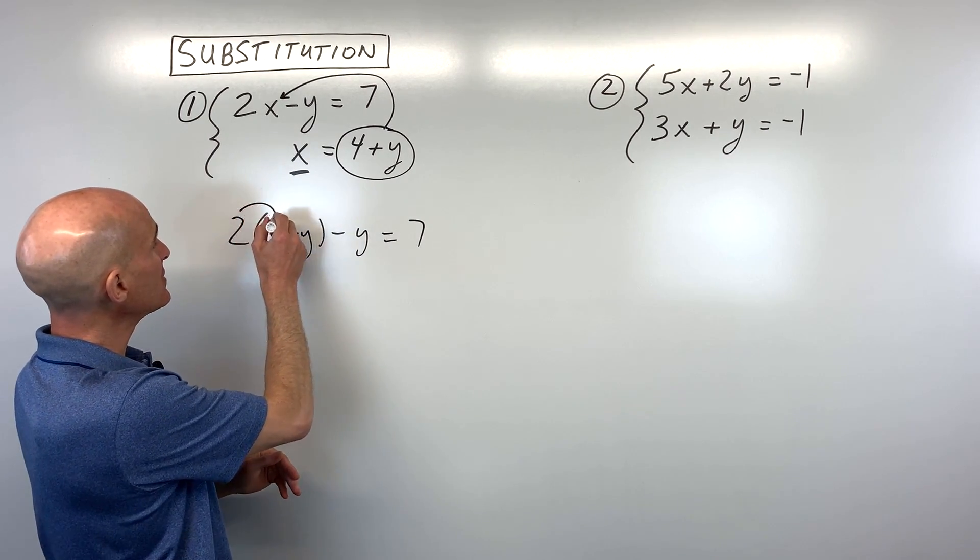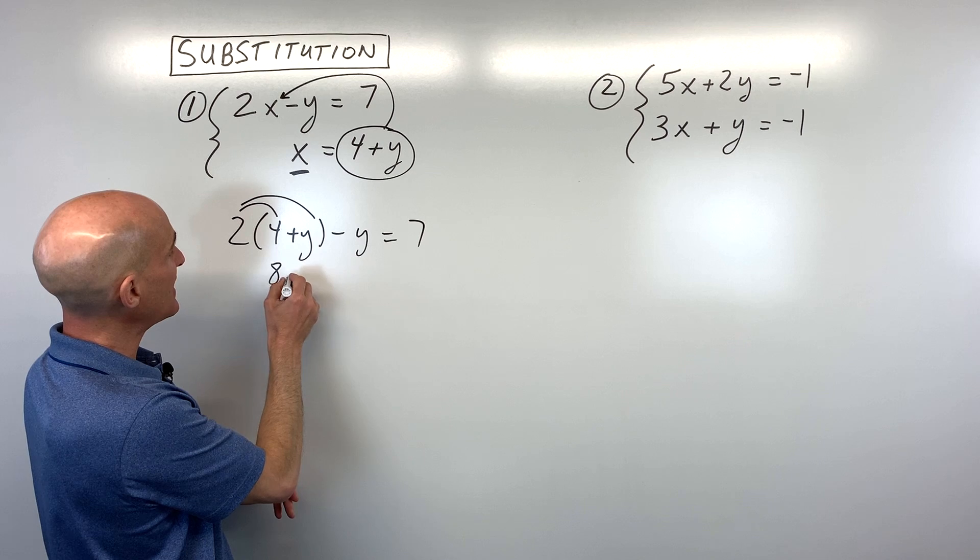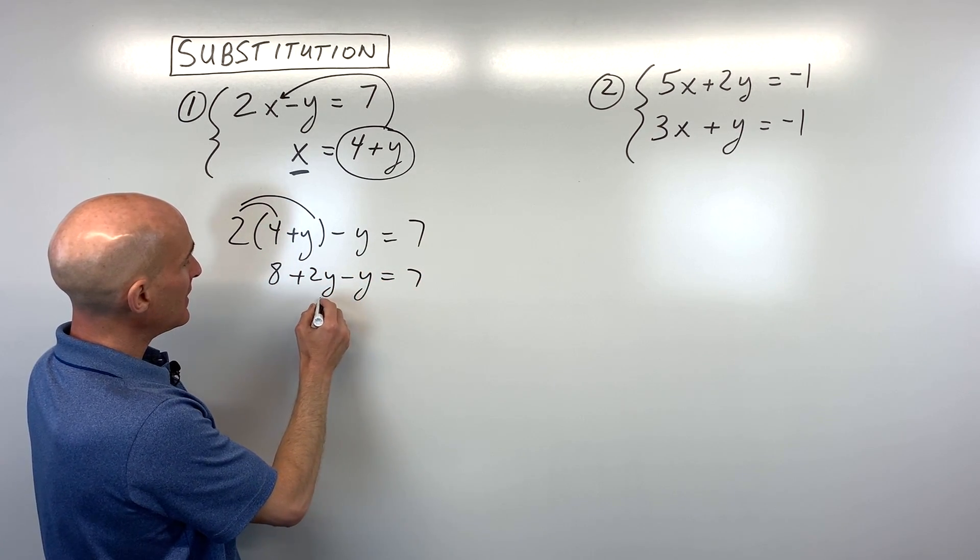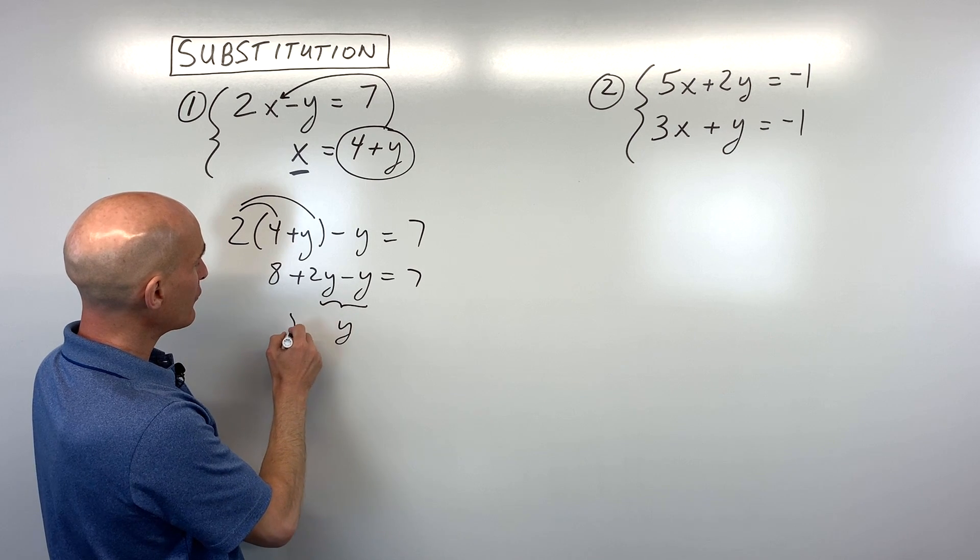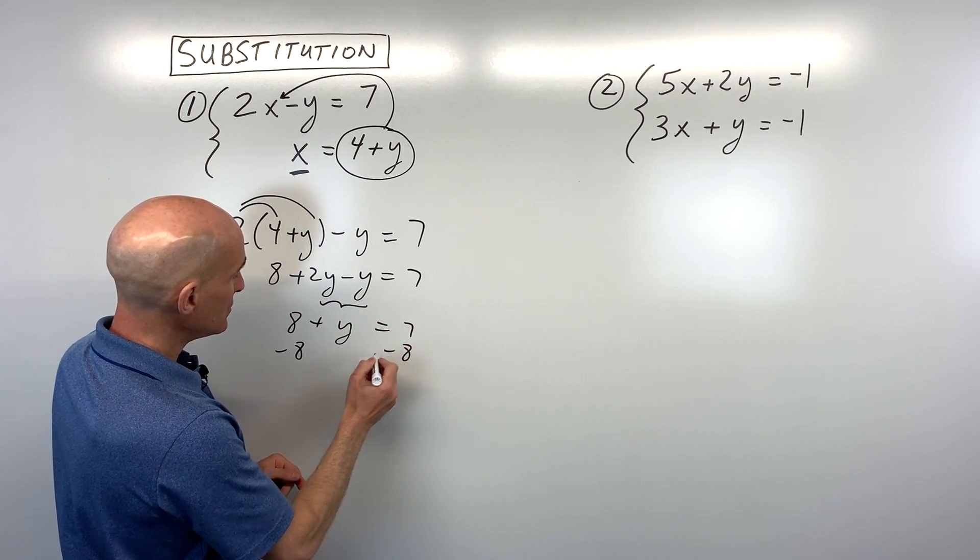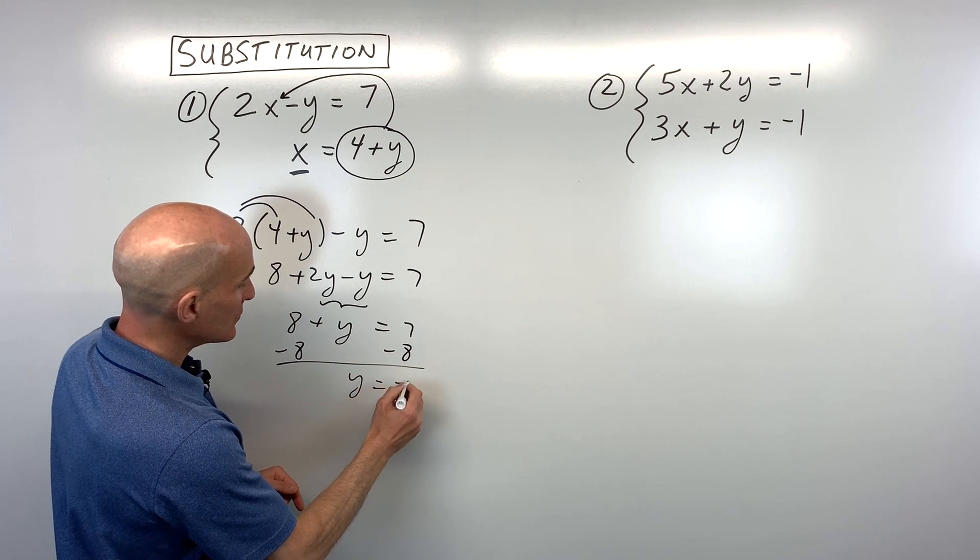Now we just have one variable. We're going to solve for y, which gives us 8 plus 2y minus y equals 7. Two y minus y is one y. Bring down the 8, subtract 8 from both sides, and you can see that y equals negative 1.